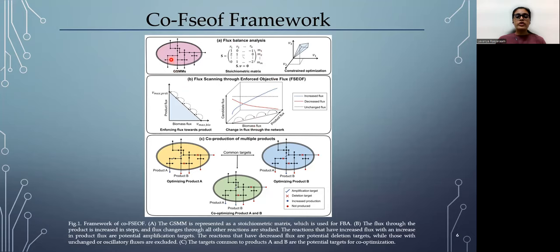This is the framework of co-FSUF. We use genome scale metabolic models of organisms, which can be modeled as a stoichiometric matrix and flux balance analysis is performed using them. Out of the various states that the organism can exist in, two of them are the maximum biomass producing state and the maximum product producing state. So as we enforce the model to move from this biomass producing state to the maximum product producing state, we see how the flux varies through all these reactions.